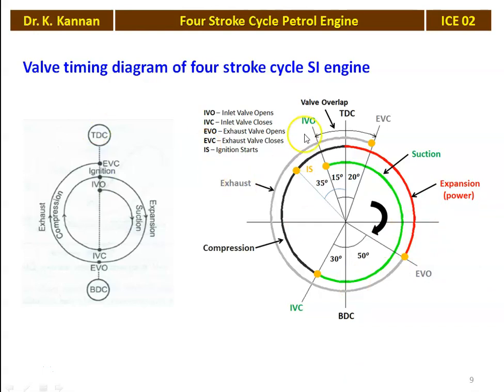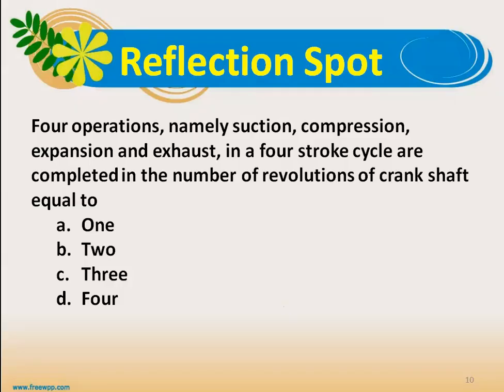This valve timing diagram can be done experimentally — you can measure the valve timing of the four-stroke cycle petrol engine in your IC engine laboratory. By doing an experiment, you can understand it better. Now, a reflection: the 4 operations — suction, compression, expansion, exhaust — in a four-stroke cycle are completed in how many revolutions of the crankshaft? Is it 1, 2, 3, or 4 revolutions?